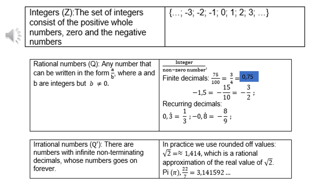Negative 1.5 is negative 15/10, which is negative 3/2. Recurring decimals: 0.3 with a dot, which is a third, or negative 0.8 recurring, or minus 8/9. If there's a pattern, if they recur, then they are rational.